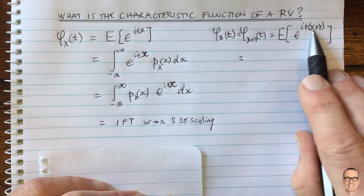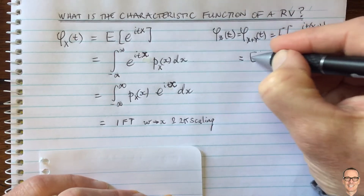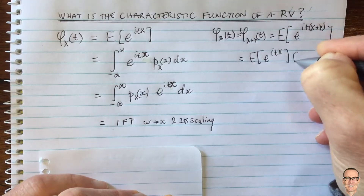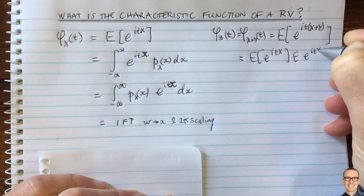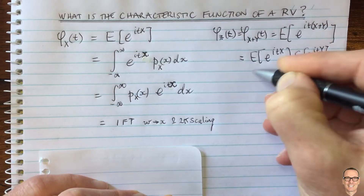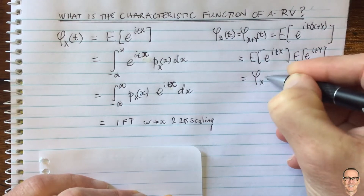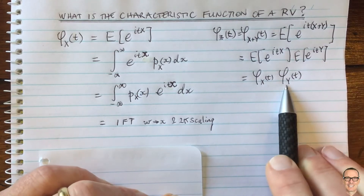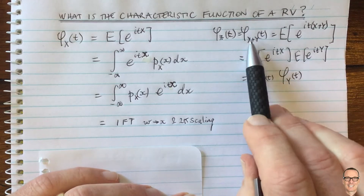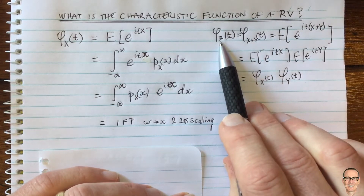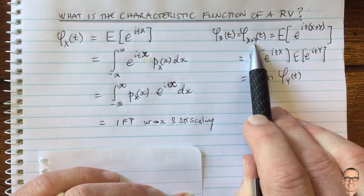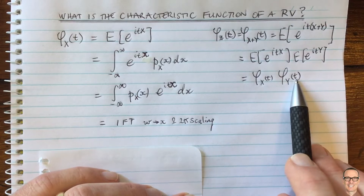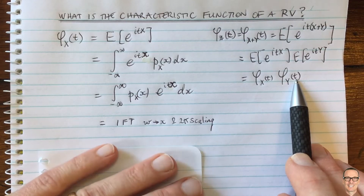If the random variables X and Y are independent, then the expectation of e to the itx times e to the ity equals the expected value of e to the itx times the expected value of e to the ity. So this equals the characteristic function of X times the characteristic function of Y. This is a very handy property — if you're interested in the addition of two random variables, you can work out its characteristic function simply by multiplying the characteristic functions of the two independent random variables.